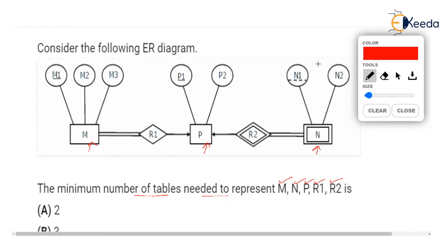M and P are strong entities whereas N is a weak entity. A weak entity does not have any primary key but it has a dashed attribute — N1 is a dashed attribute — and this will be combined with the primary key of the strong entity.